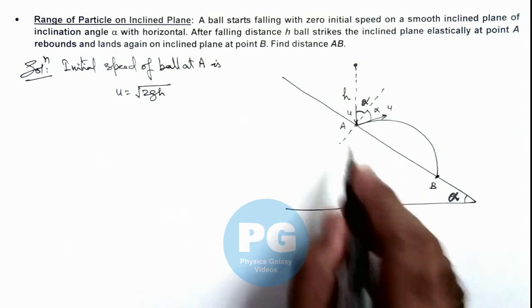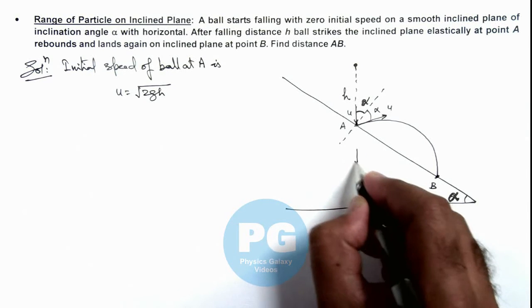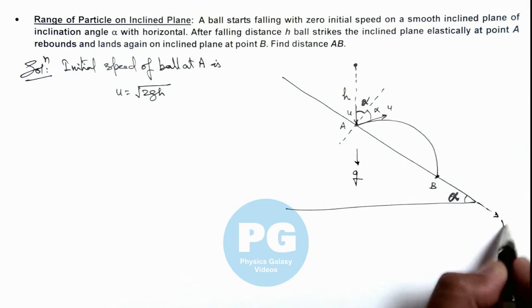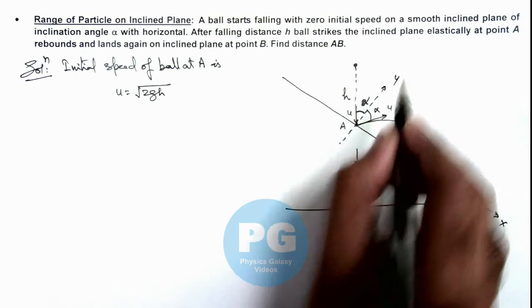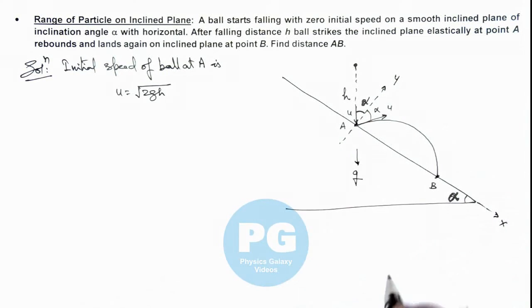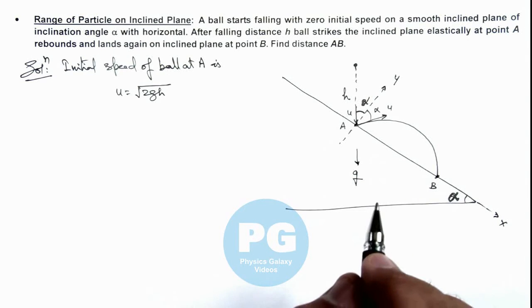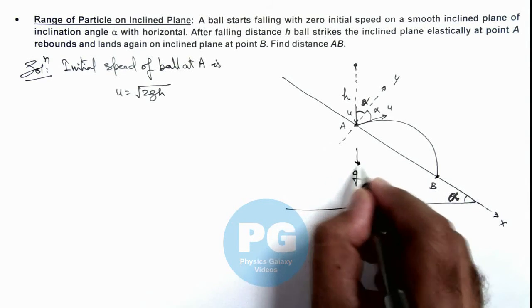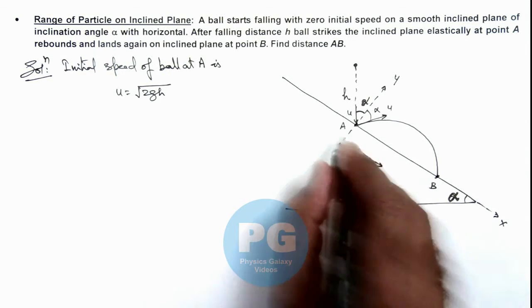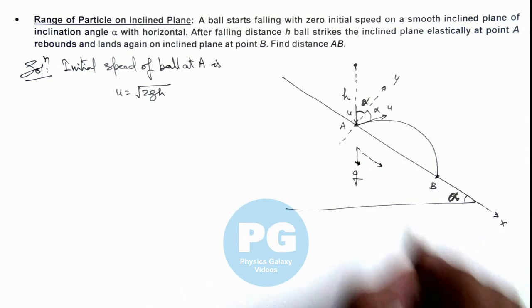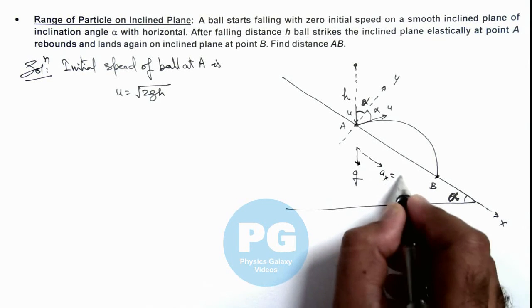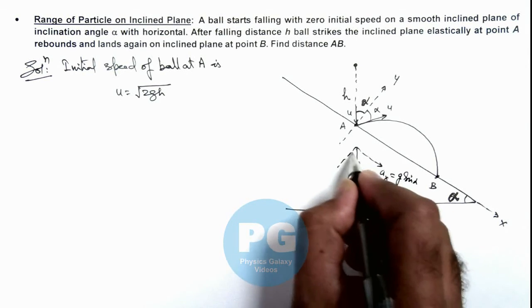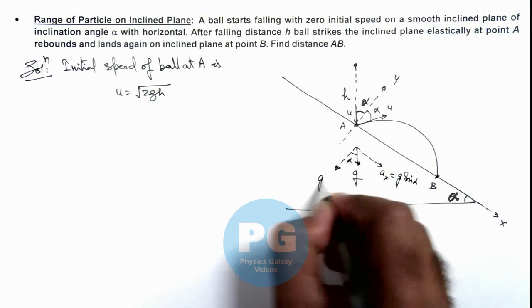In this situation we can see g is acting in downward direction. If we take this direction as x-axis and this direction as y-axis, and point A as origin of our coordinate system for analysis of this problem, we can see along the incline, along x-axis, the acceleration is g sine alpha, and in normal direction this acceleration is g cos alpha.